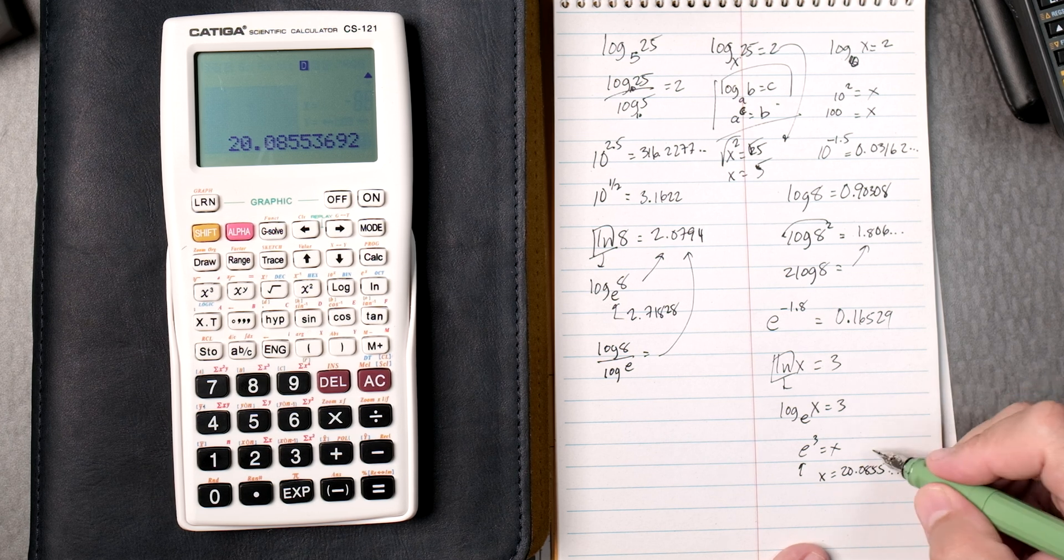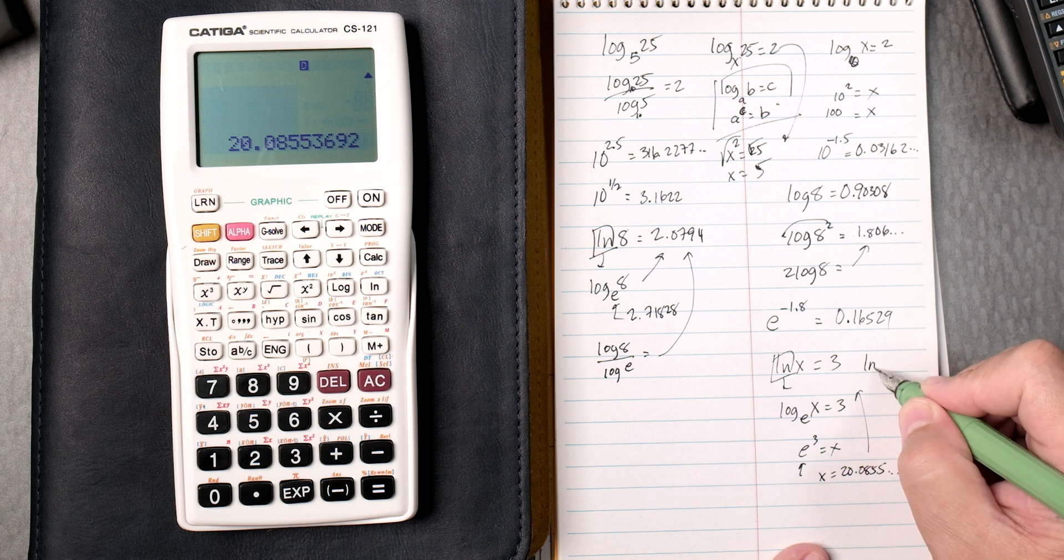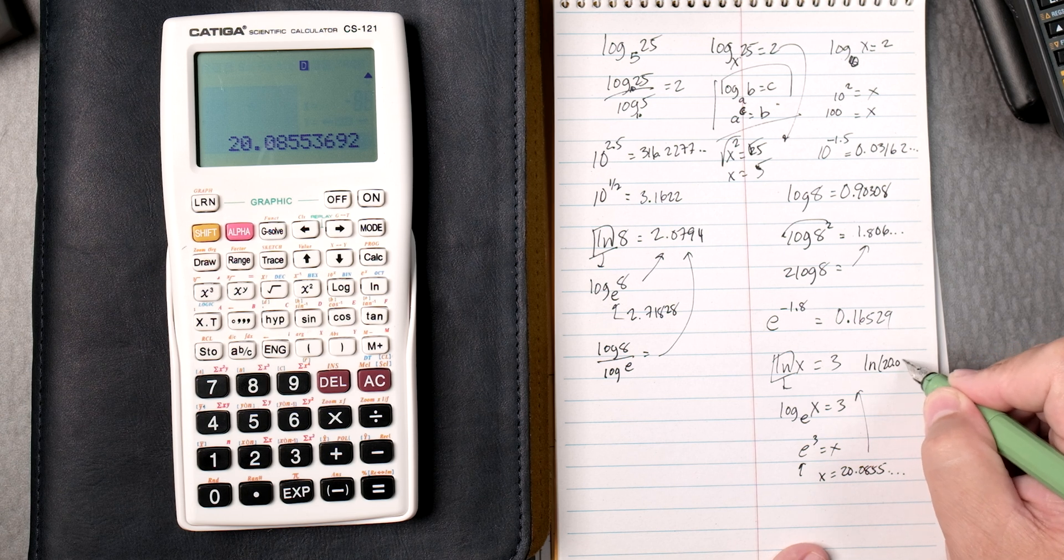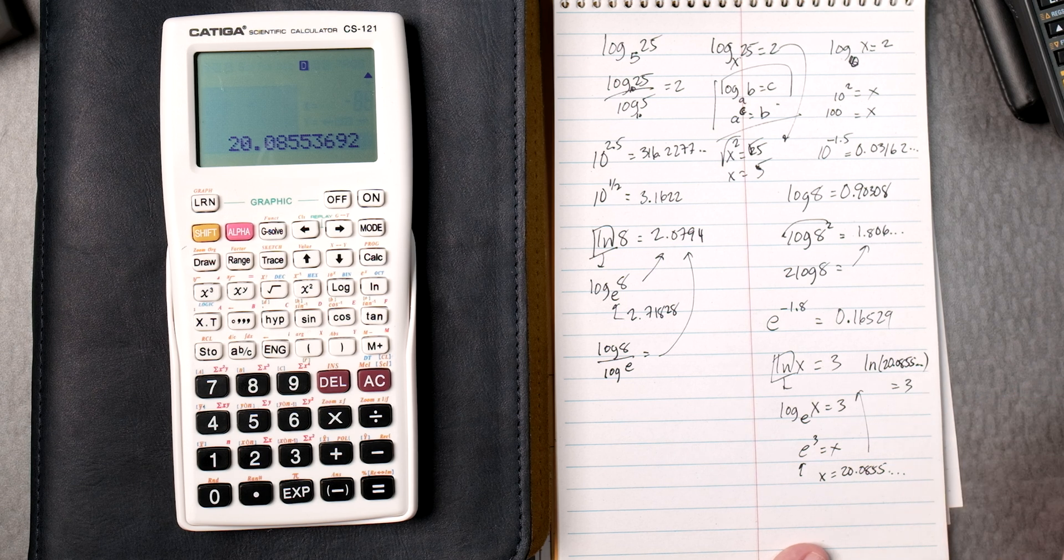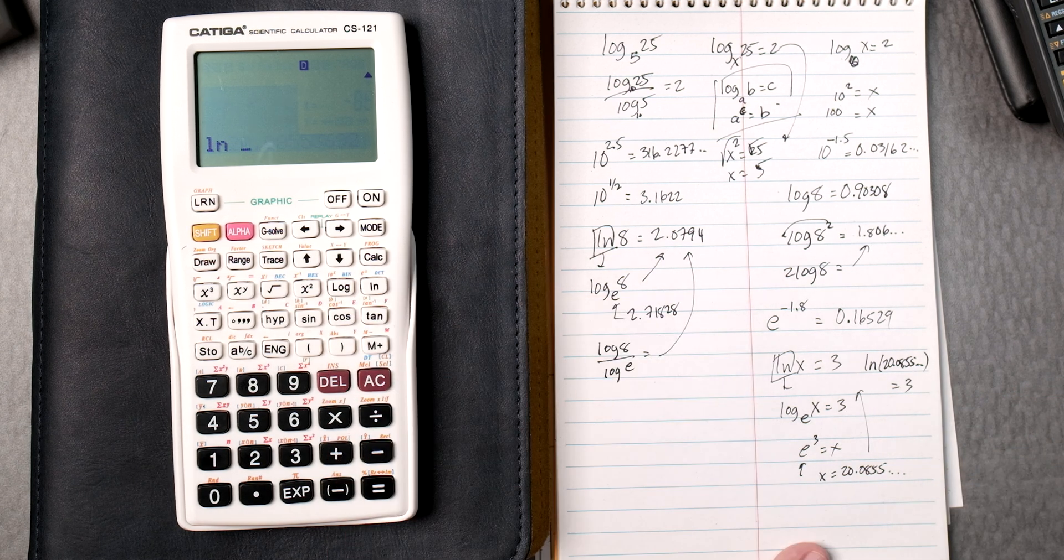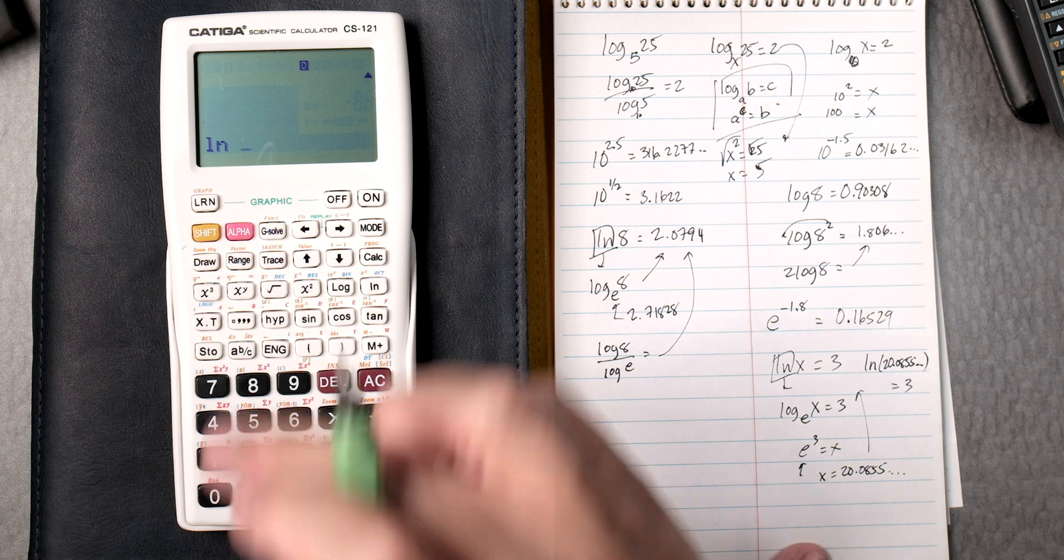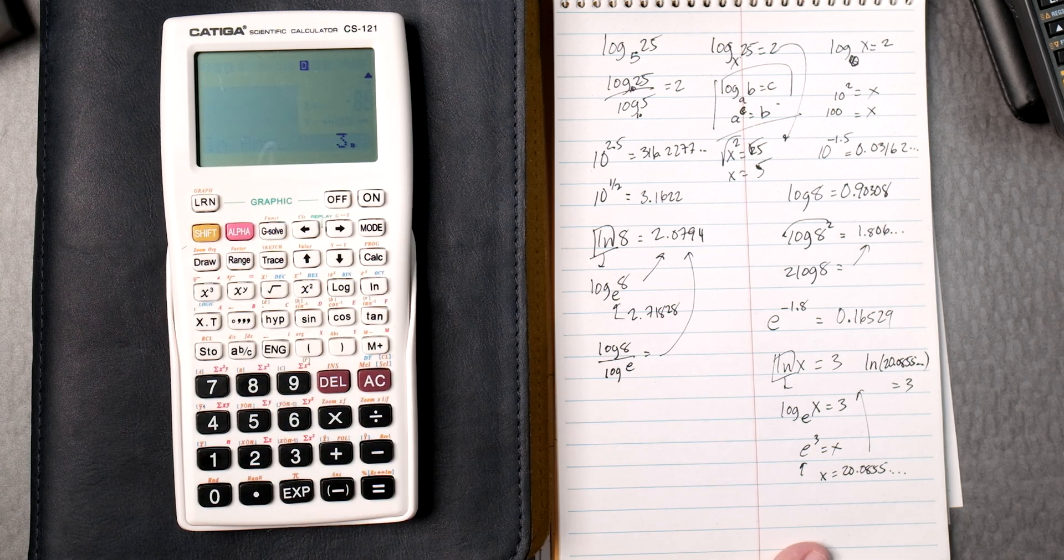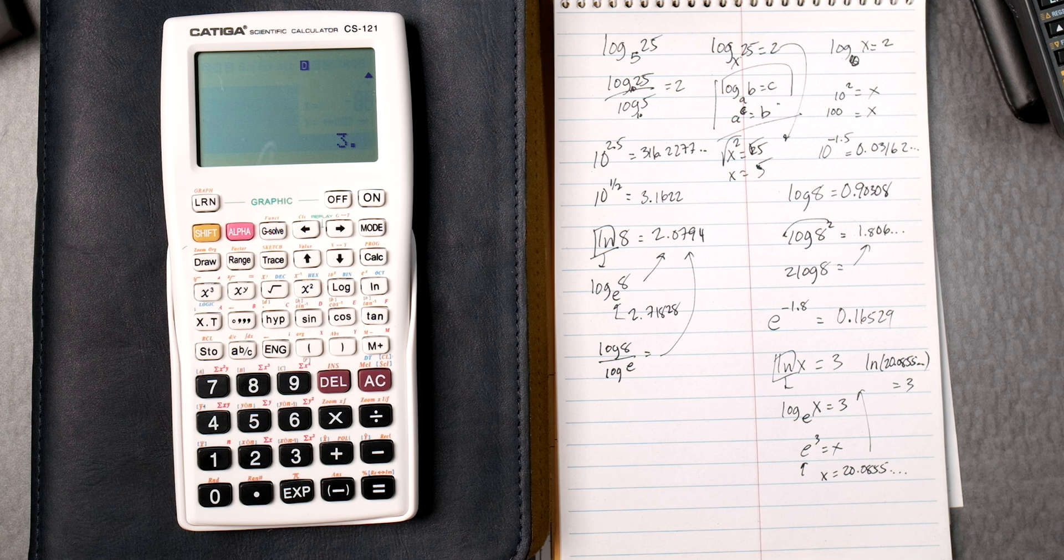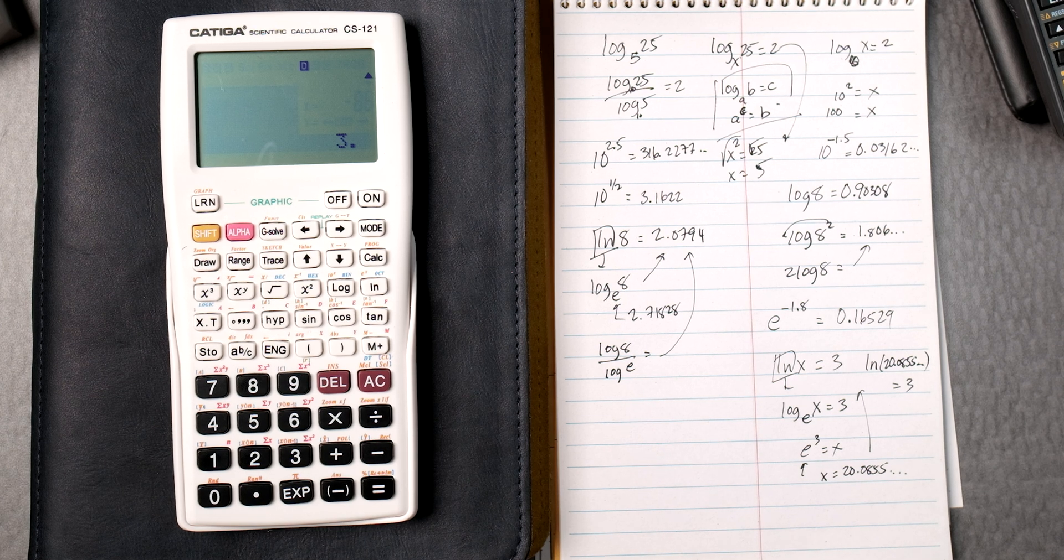What does that mean? Well, if you go back to the natural log of 20.0855, keep all those numbers, that should give you three. So let's see. If we press natural log and then the last answer, shift last answer, press equals, gives you three. Interesting, isn't it? A lot of steps.